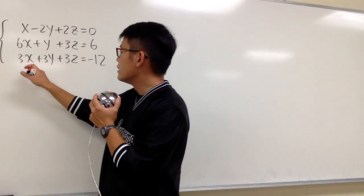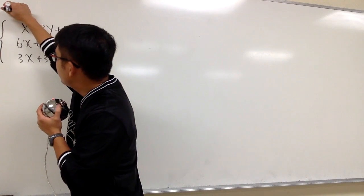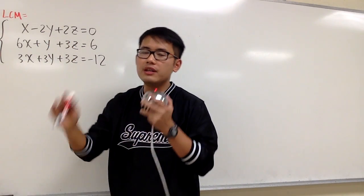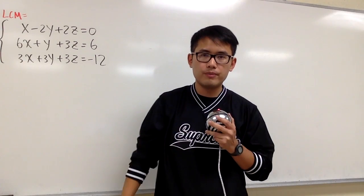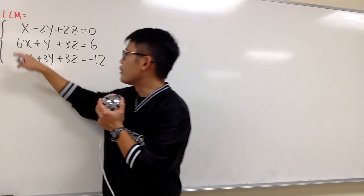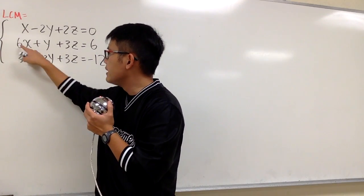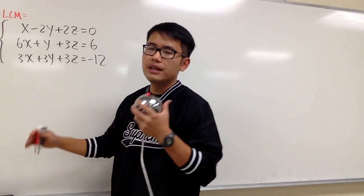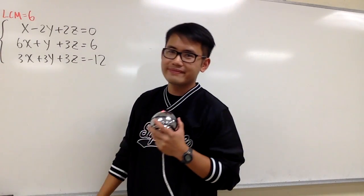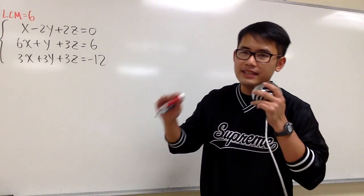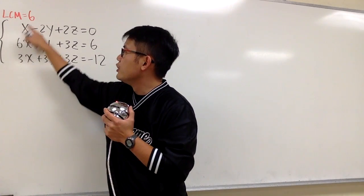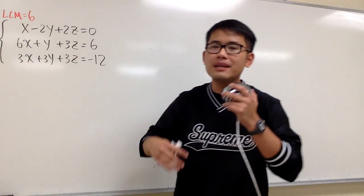This is what we do first. Above the x right here, let's put down LCM, which stands for least common multiple. We are going to look for the least common multiple of the numbers 1, 6, and 3, and the answer for that is 6. The idea here is that we want to make all the numbers in front of the x to be 6 by multiplying.